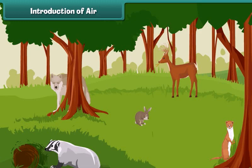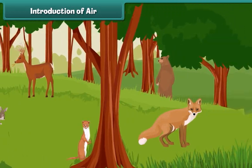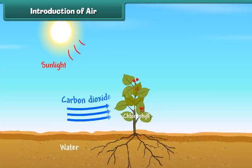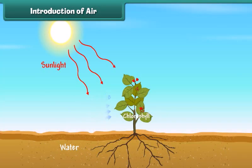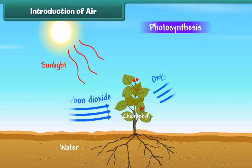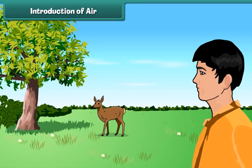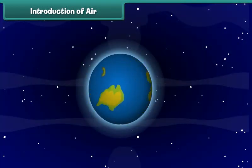Air is very important for almost all life on earth including plants and animals. Plants need carbon dioxide from air to do photosynthesis and release oxygen into the air. Human beings and animals need to breathe air to get the oxygen they need to survive.